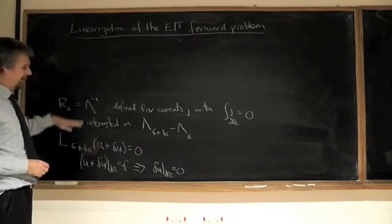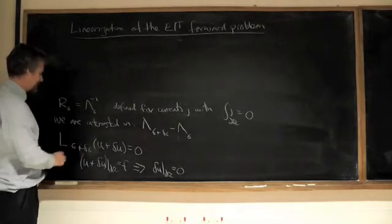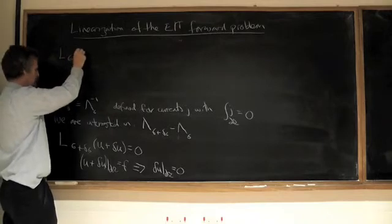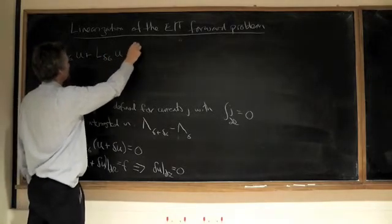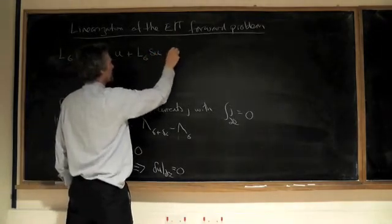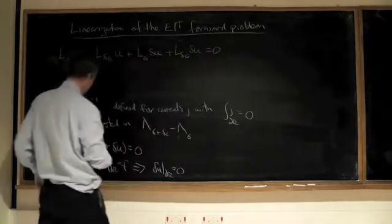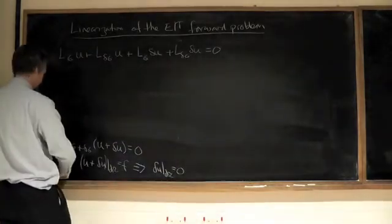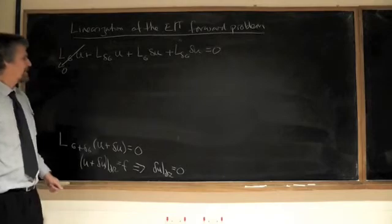So, expanding this, I'm going to have to start again here. You have to imagine the board rolls around, because you can only video one board once. So, if we expand this, then we get L_sigma U, plus L_{delta_sigma} U, plus L_sigma delta U, plus L_{delta_sigma} delta U. So, that's just from this. And then, of course, that's zero by definition.